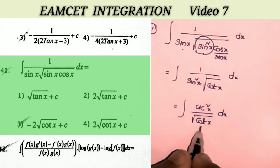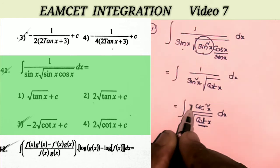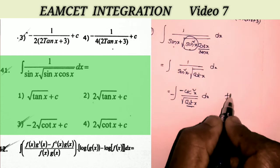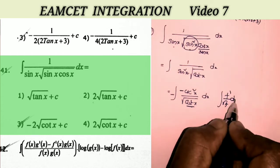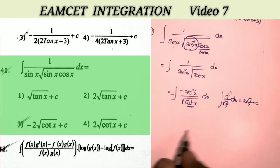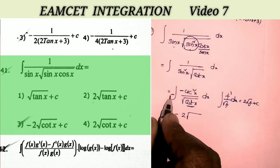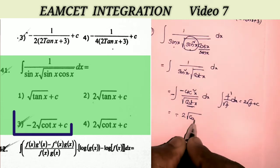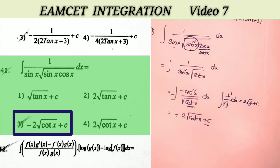So it becomes integral of cosec² x by √(cot x) dx. The derivative of cot x is −cosec² x, so we apply a minus sign here. Clearly this is in the form f'(x) / √f(x). The formula for ∫ f'(x) / √f(x) dx is 2√f(x) + c. So the answer is −2√(cot x) + c. That is the third option.